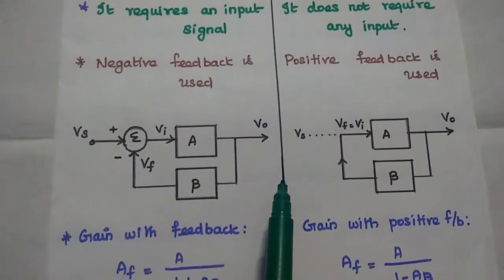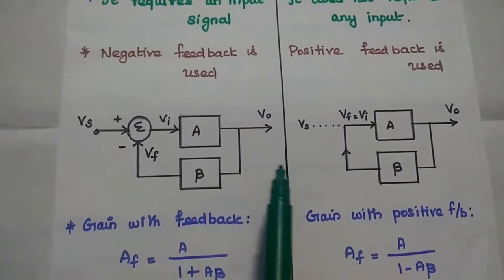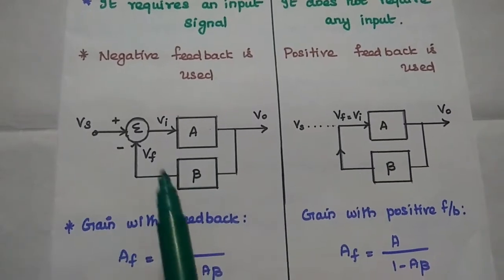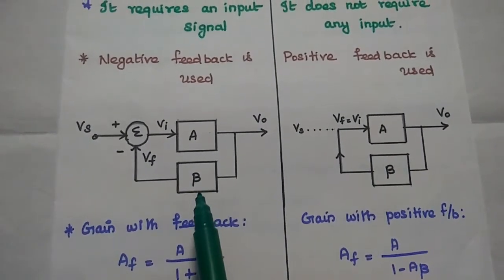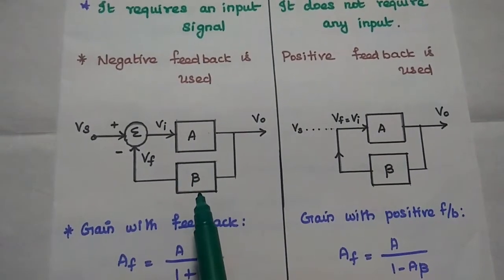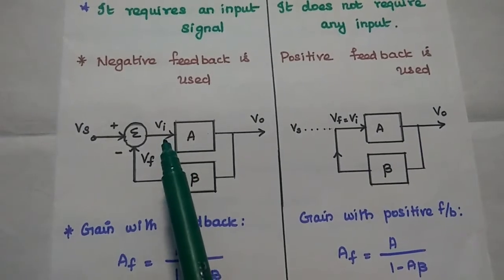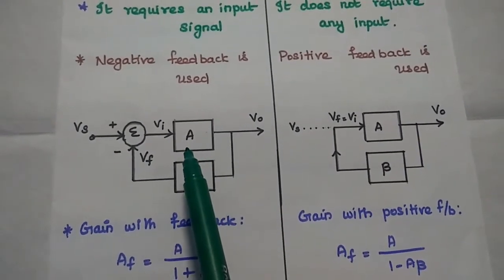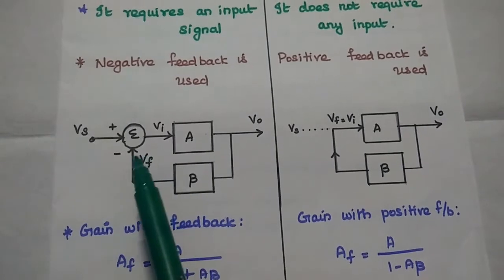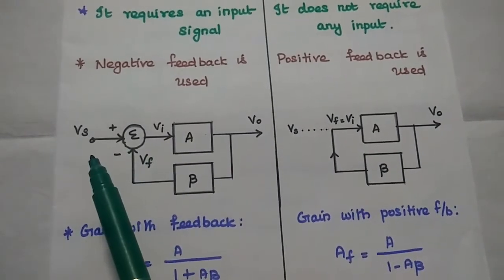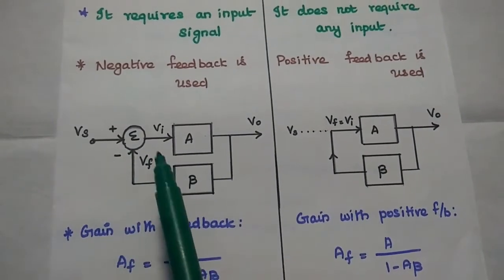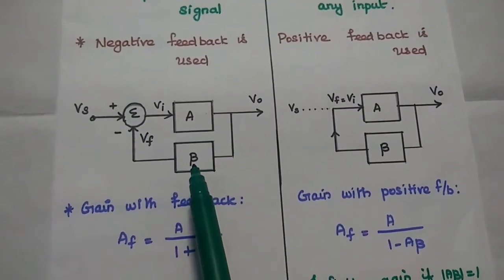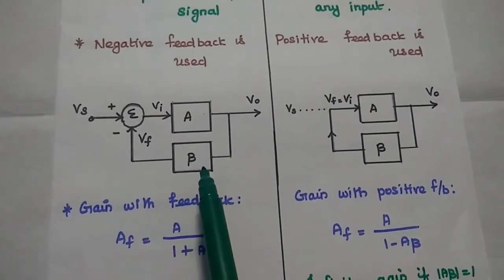This is the diagrammatic representation of amplifier and oscillator with the feedback method. In this amplifier, we are using negative feedback. Here the actual input to this amplifier can be obtained by subtracting the feedback signal from this source input signal. This is the amplifier circuit with negative feedback.